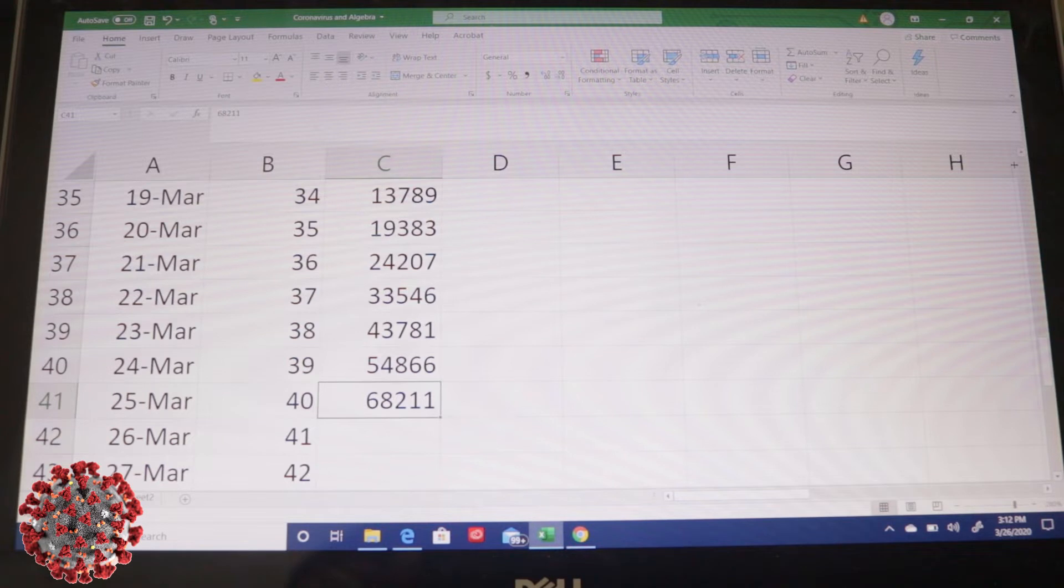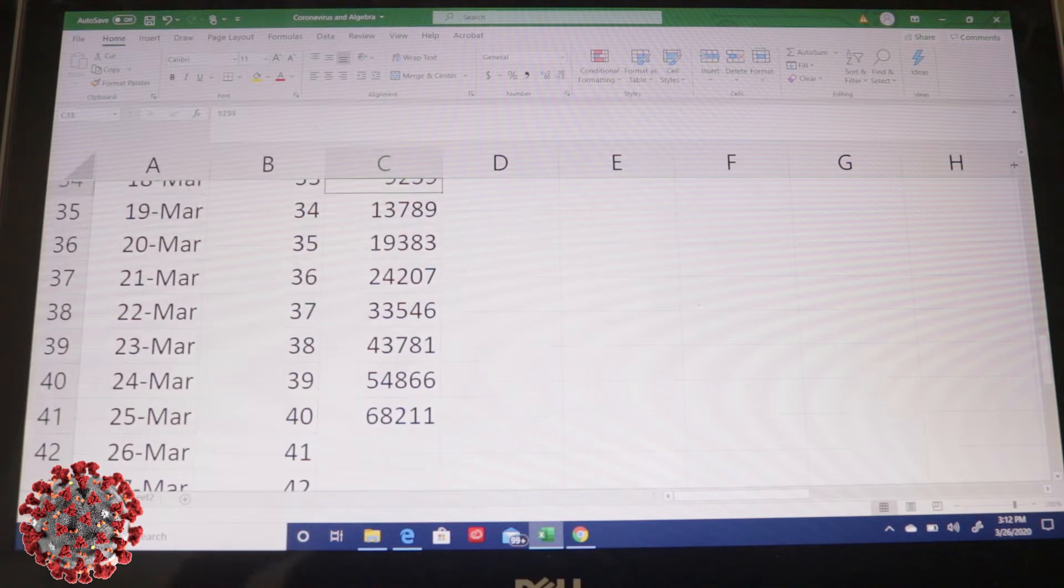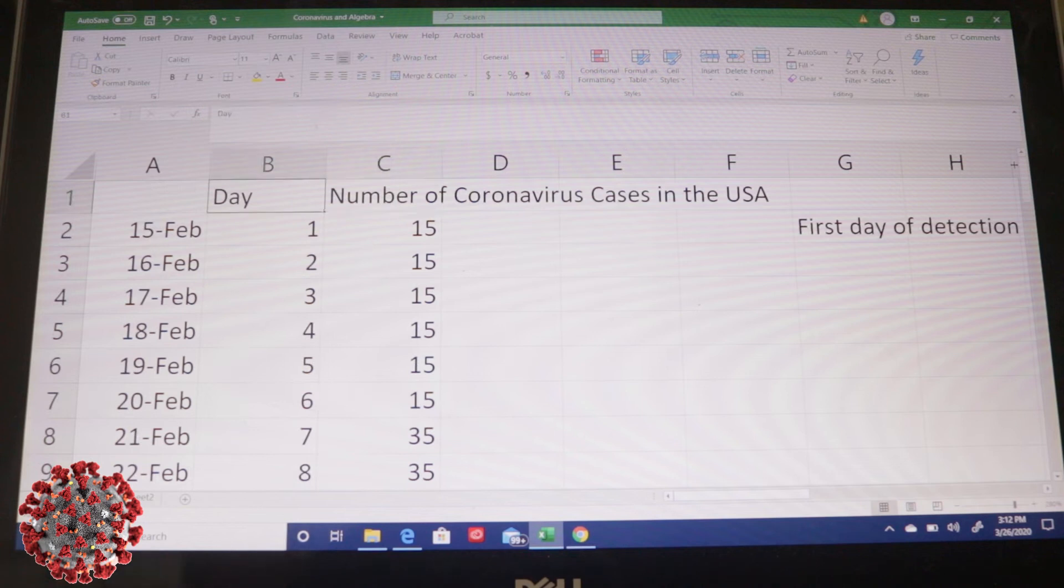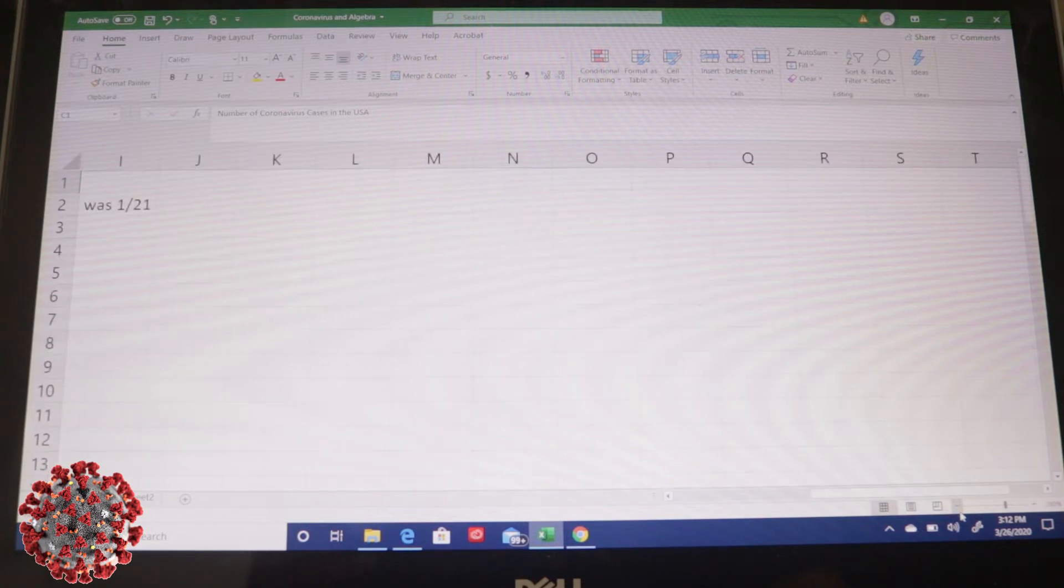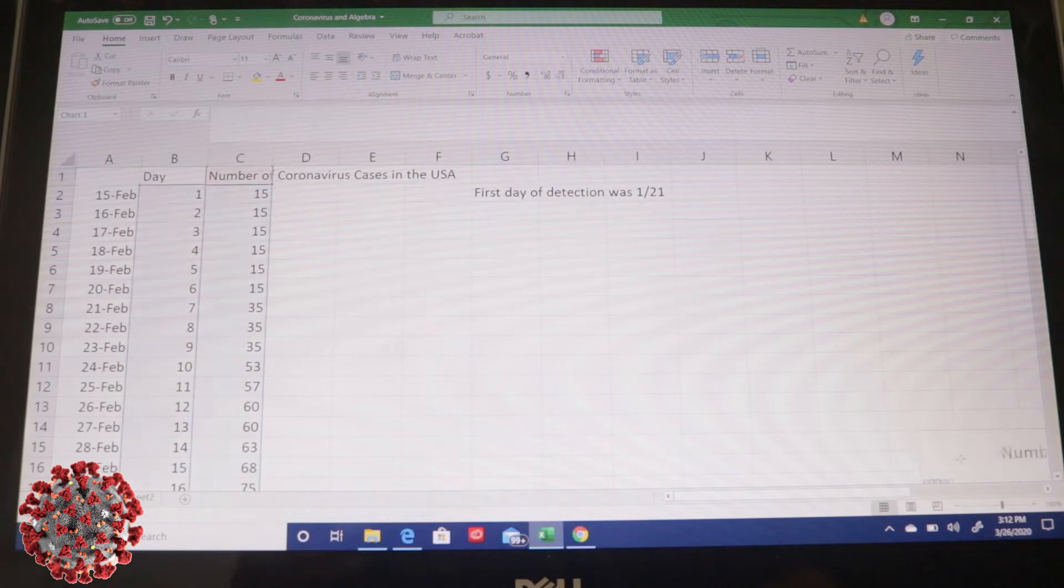And so I have all the data listed all the way up until yesterday, the 25th, which was the 40th day. It was 68,211 cases. So this is the data. My independent variable is the day, the number of days, where day one represents February 15th. My dependent variable is the number of coronavirus cases in the US. So I plotted that data using a scatter plot. So let me show you what that looks like. And here is the graph of it.